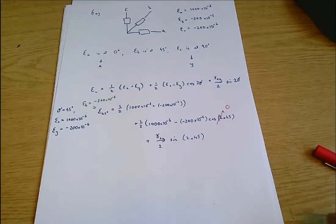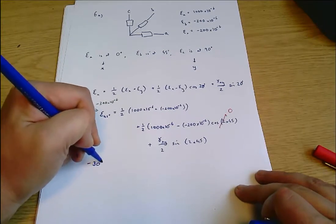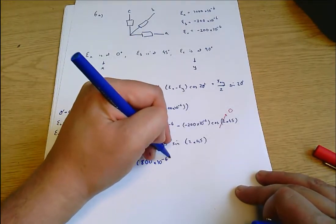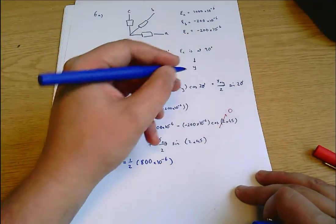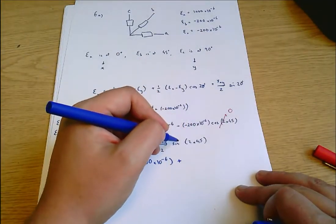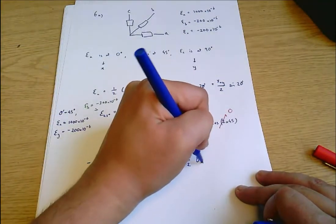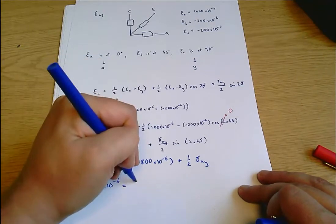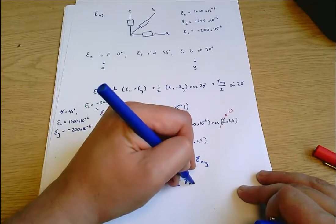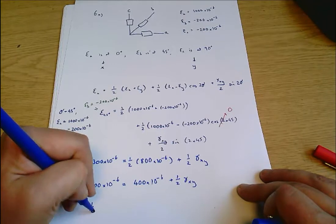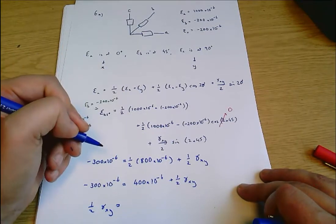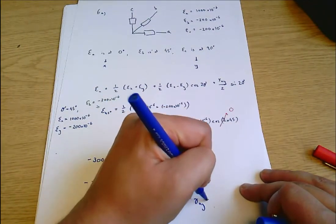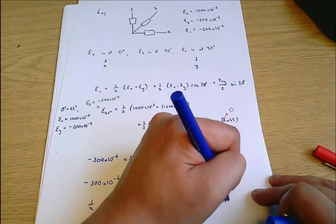Substituting everything in: minus 300×10⁻⁶ equals one-half of 800×10⁻⁶ (which is 400×10⁻⁶), the cos term is zero, and sin 90° is 1, so we get plus one-half gamma XY. Therefore: minus 300×10⁻⁶ equals 400×10⁻⁶ plus one-half gamma XY, which means one-half gamma XY equals minus 700×10⁻⁶.